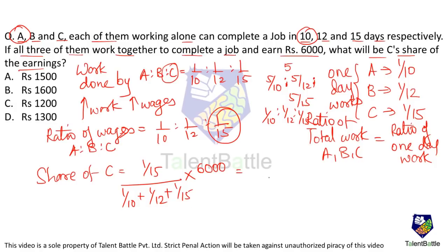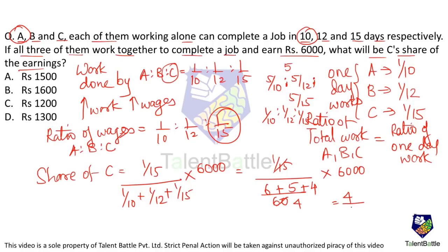C's share = (4 / (6+5+4)) × 6000 = (4/15) × 6000 = 1600 rupees. That is option B.